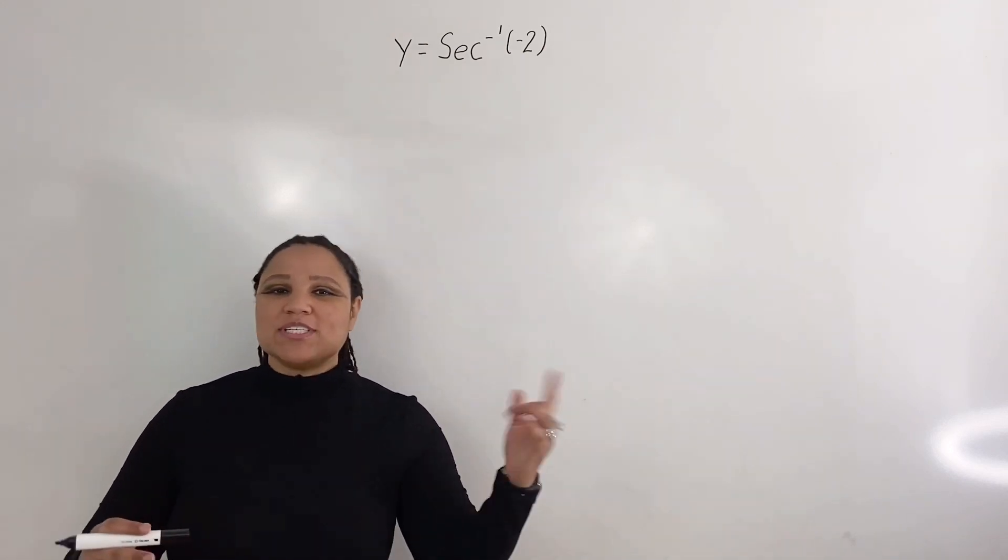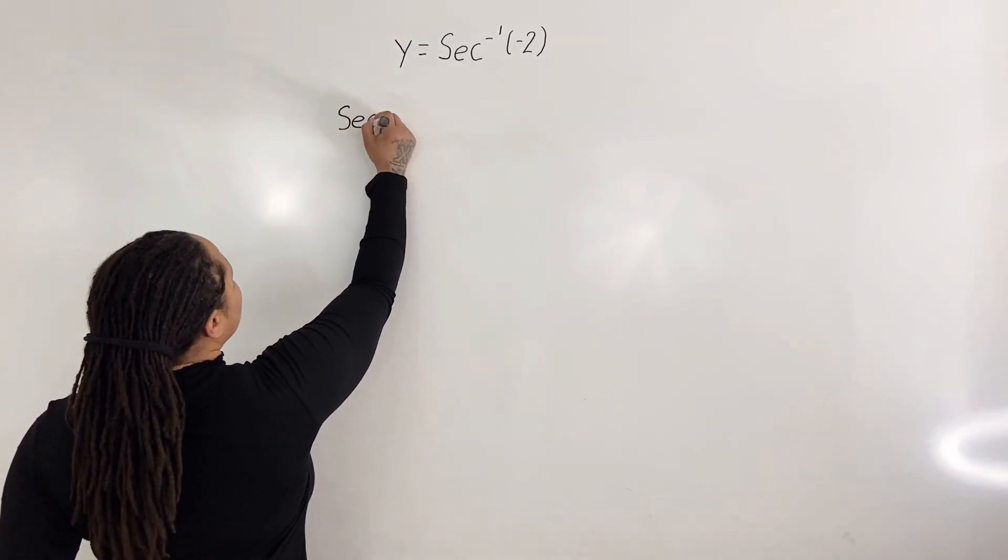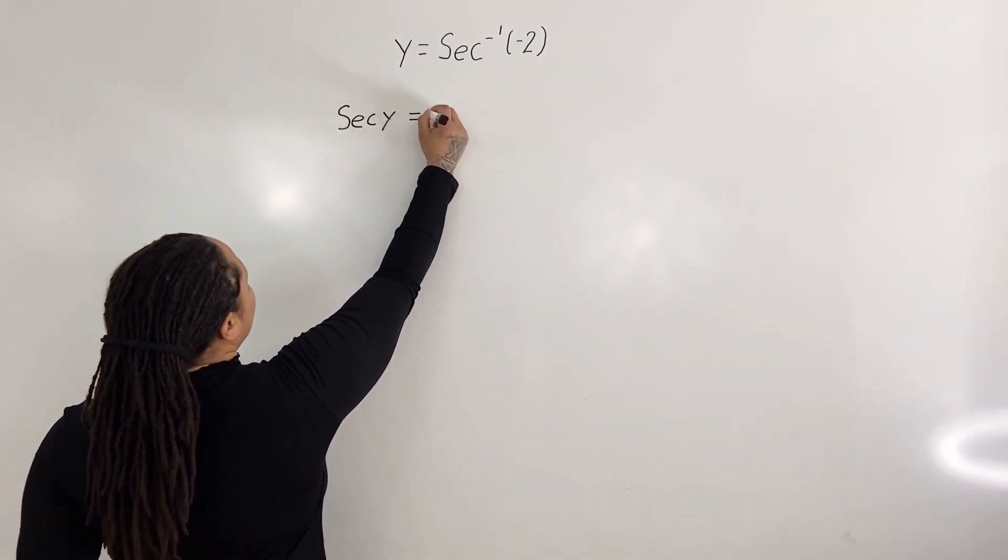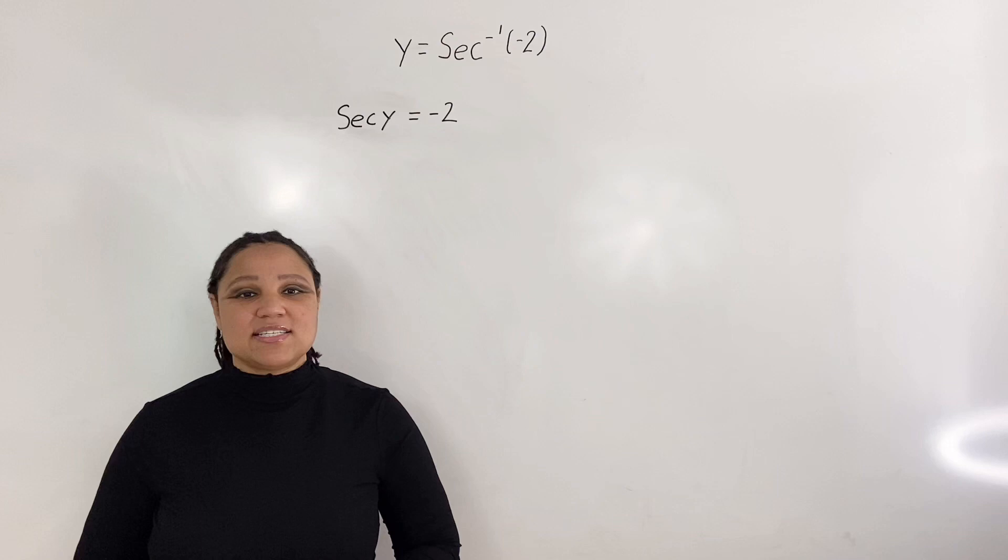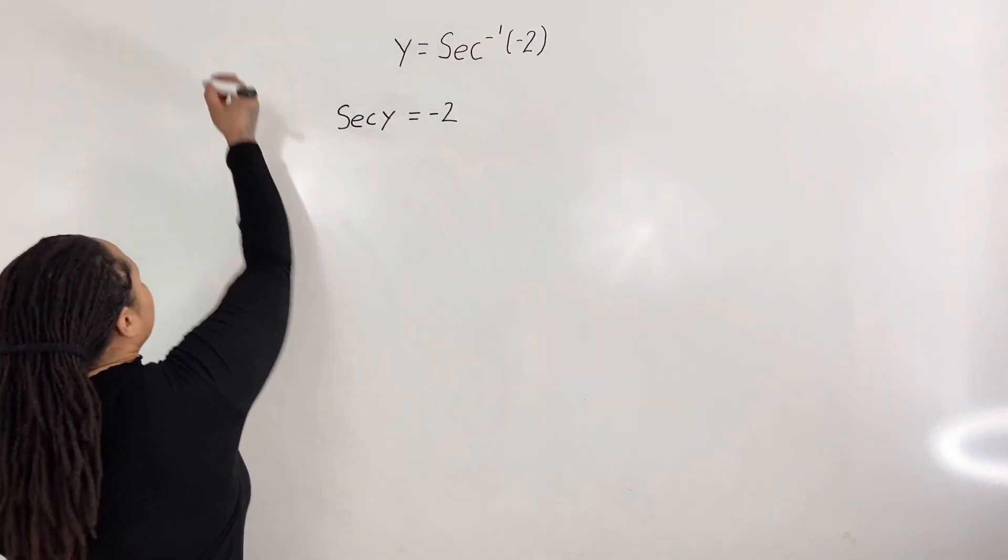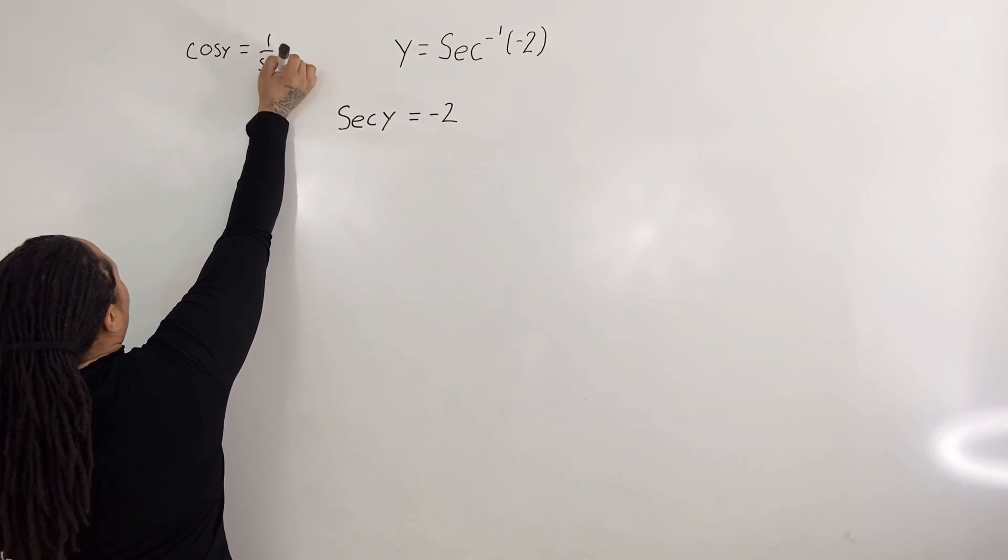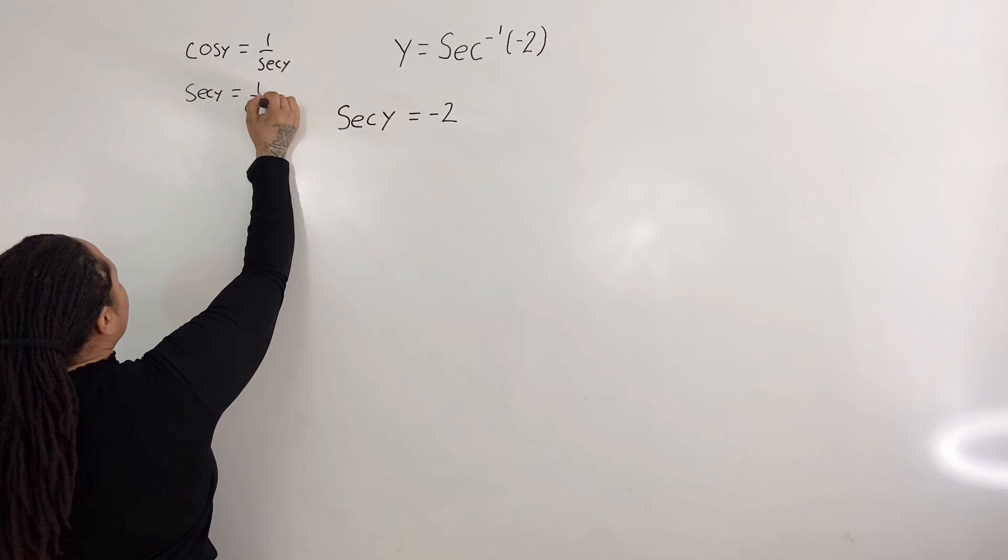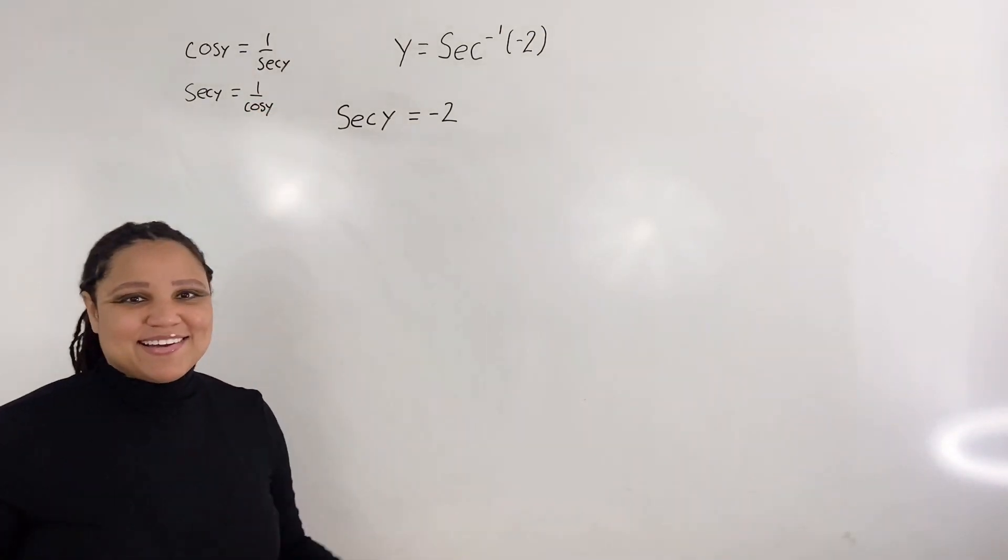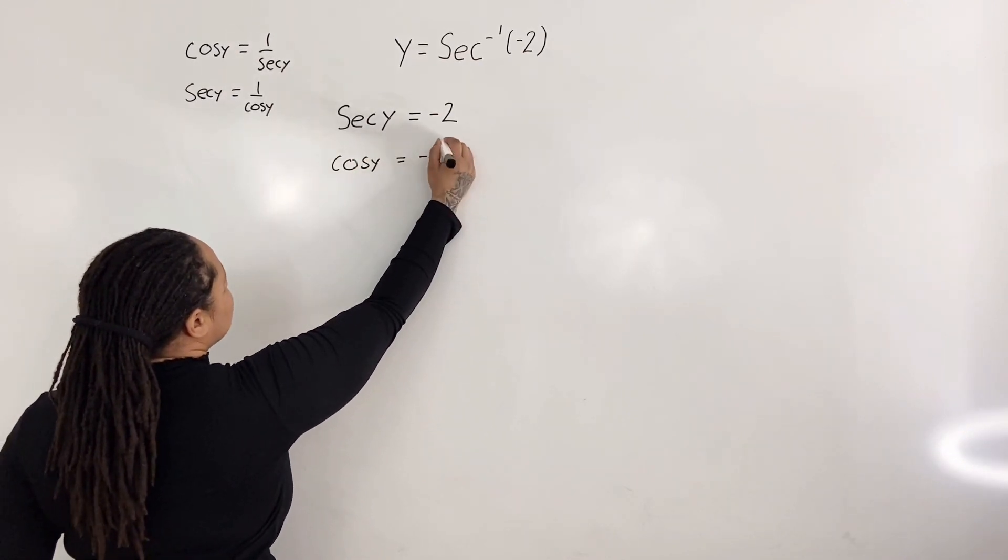So the first thing we're going to do is take the secant of both sides. If I do that, we have secant y equals negative 2. Now, it is much easier to evaluate cosine of y instead of secant y. So I'm going to use the fact that cosine y equals 1 over secant y, or you can think of it as secant y equals 1 over cosine y. So by applying that, we have cosine y equals negative 1 half.